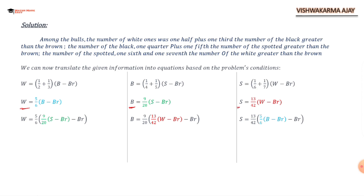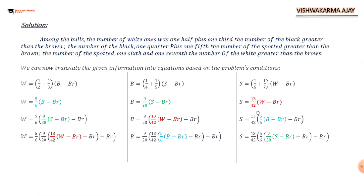From this question we can get three equations, but I am going to convert them into only two variables — white and brown — by substituting the value of B and then S. After solving, I get W = 742/297 × Br, B = 178/99 × Br, and S = 1580/891 × Br.